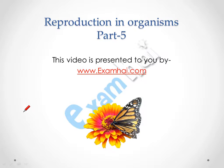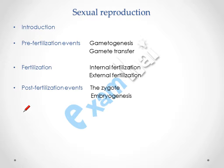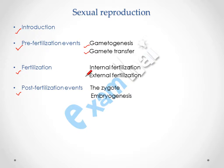Hello everyone, today we are going to discuss the topic of reproduction in organisms, presented by www.examha.com. As we have discussed asexual reproduction in previous videos, now we are going to discuss sexual reproduction, covering introduction, pre-fertilization events, fertilization, and post-fertilization events. Pre-fertilization events occur before fertilization, like gametogenesis and gamete transfer. Fertilization is of two types — internal and external — and post-fertilization events occur after fertilization, like zygote formation and embryogenesis.